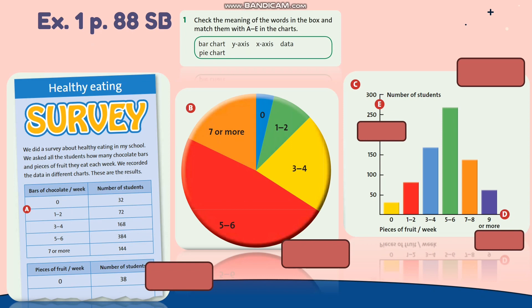What picture shows a pie chart? Good — picture C. What picture shows a bar chart? Yes — picture B. What pictures show the y-axis and x-axis? Yes — pictures D and E. And the last one: what picture shows data? Yes — picture A.